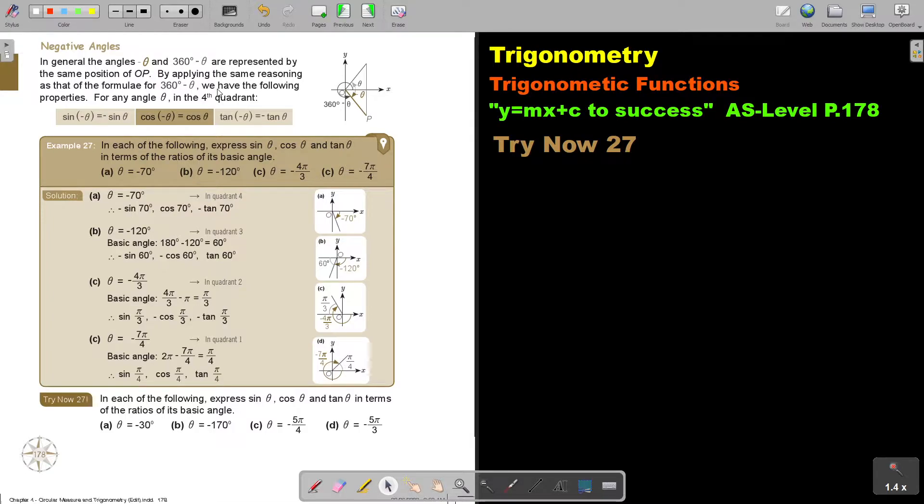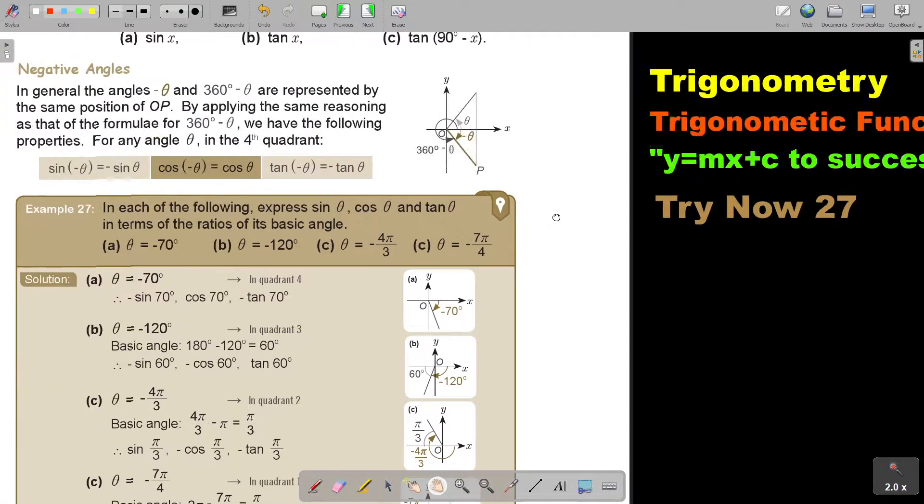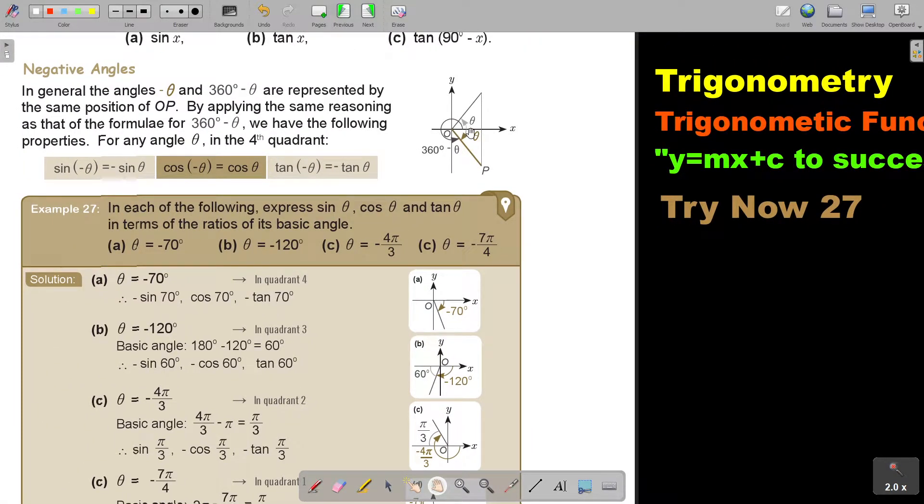Let me just show you and make it a little bit bigger so you see better. If this is theta, this is negative. This is 360 minus theta. But if I go around like this, it's going to be negative in bracket 360 minus theta. Let's just go through this list here.